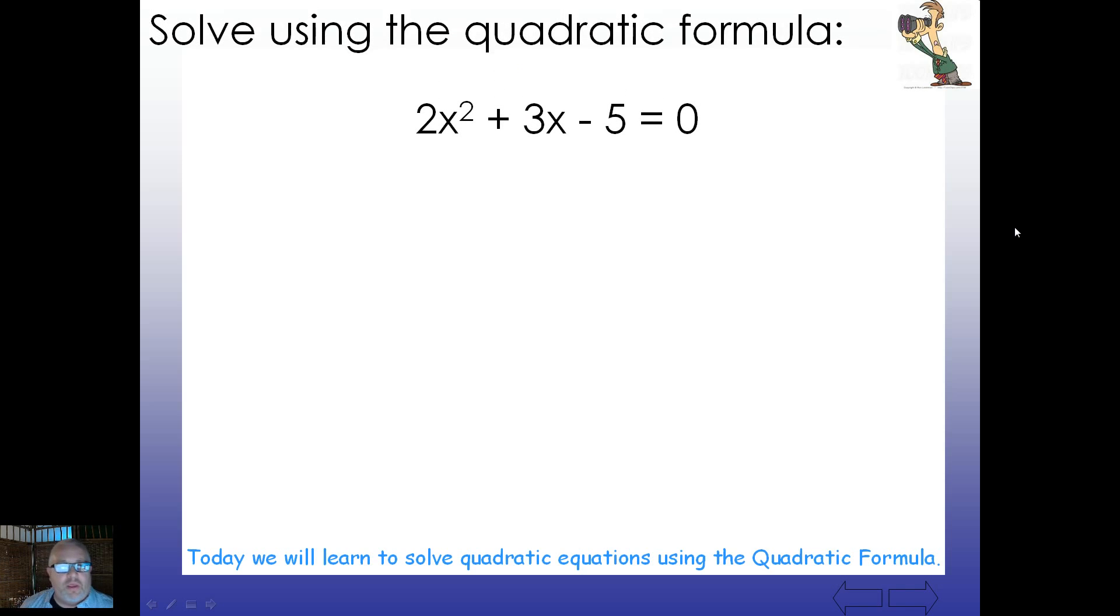Let's look at an example here. To solve the quadratic formula, we've got an equation here. 2x squared plus 3x minus 5 equals 0. First things first, is that in proper form? It is. Let's identify a, b, and c. So, a is 2, b is 3, and c is negative 5.